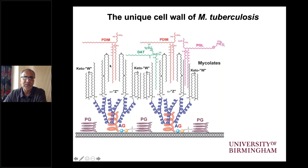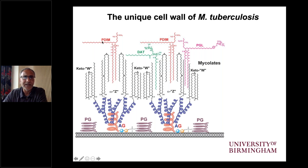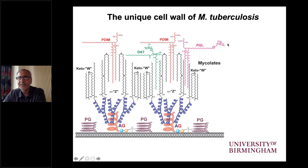Attached to the termini of the arabinogalactan, we have characteristic mycolic acids — unusual fatty acids ranging from C70 to C90 in carbon size, with an alpha-alkyl chain of around C26 and a meromycolate chain of around C50, featuring cyclopropane rings, ethyl branches, keto and methoxy modifications. Intercalated within this matrix are unusual lipids: phthiocerol dimycocerosates, acylated trehalose derivatives, and phenolic glycolipids, making this a very dense, lipid-rich cell wall region.